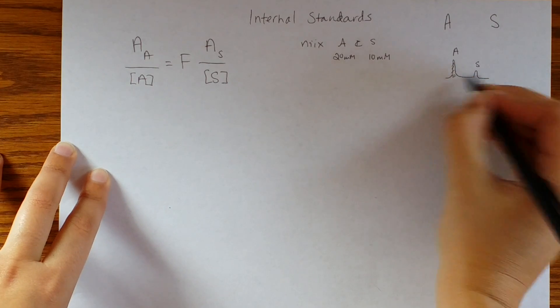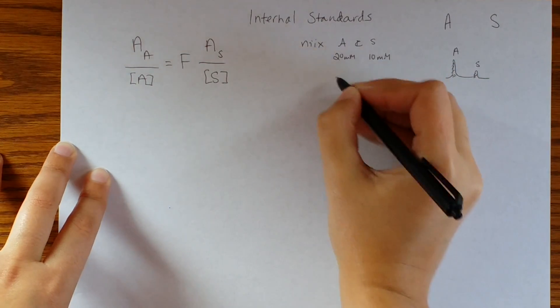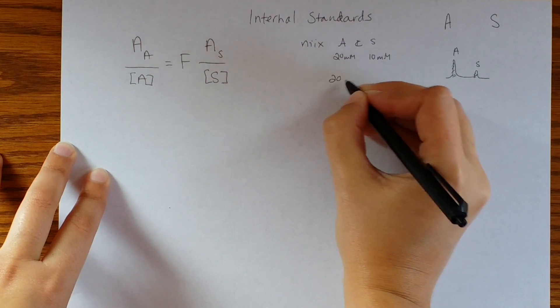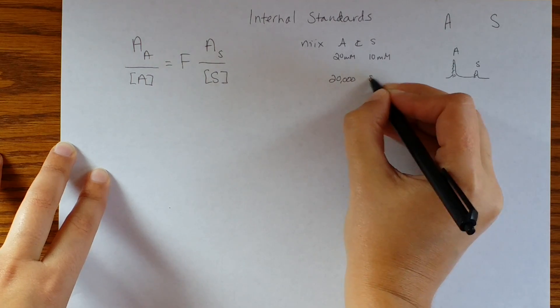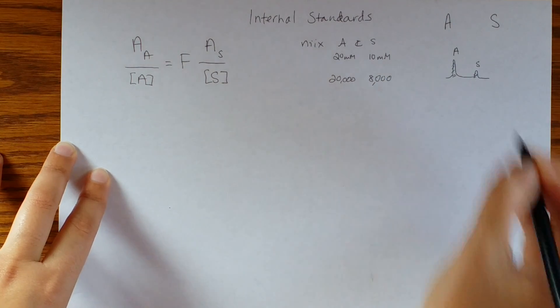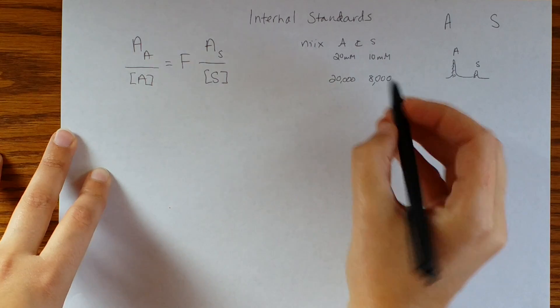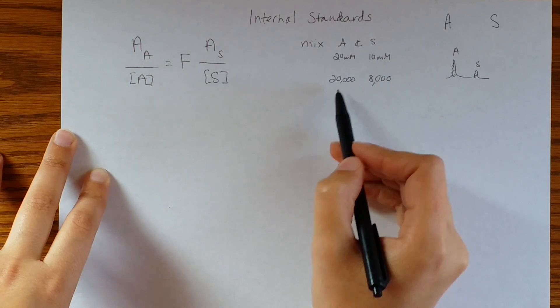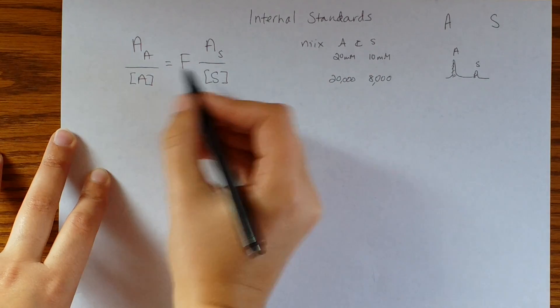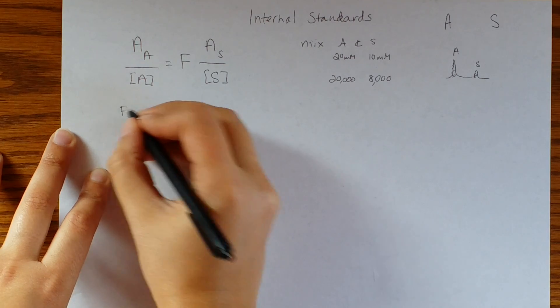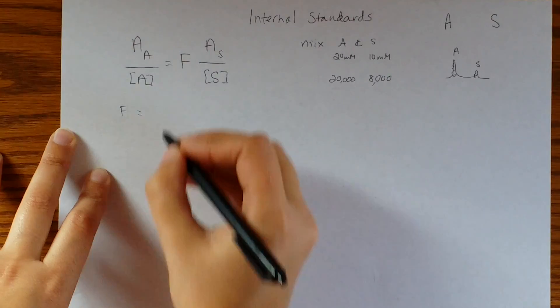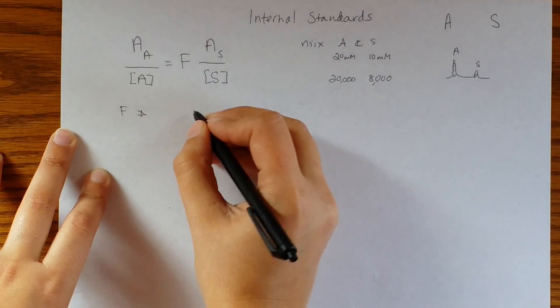You take the area of this, you integrate it and you shade it, and let's just say we come out with 20,000 and 8,000 as our areas. So the very first thing to do is to use the fact that we know the concentration of both and that we have measured areas of both to figure out F. Always we want to figure out what our F area is.